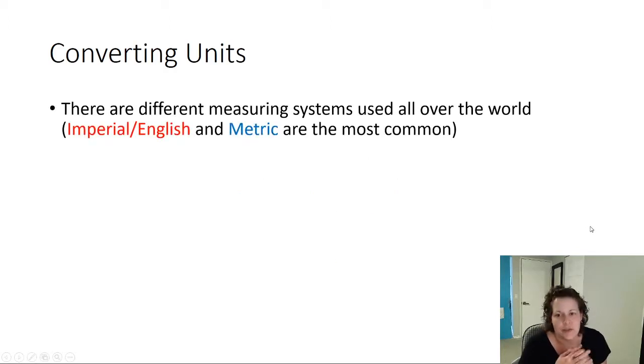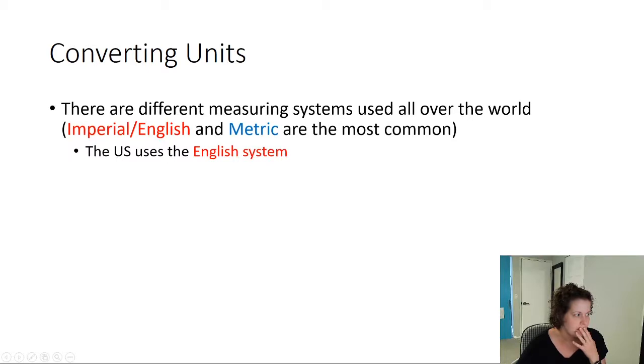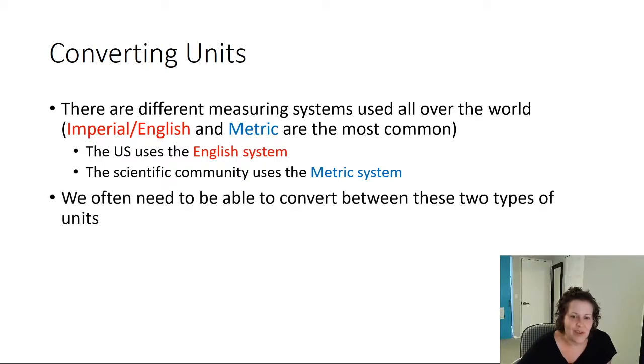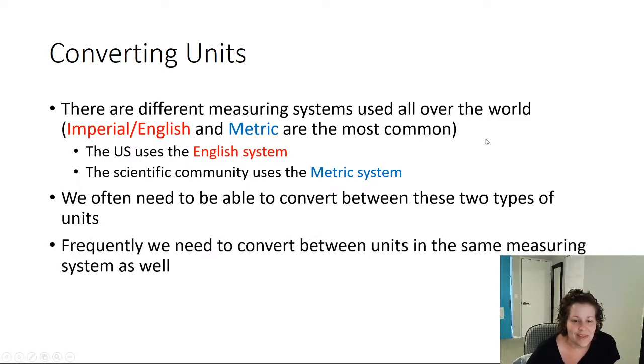So there are different measuring systems used all over the world. The two most common that we hear of are the Imperial or English system and then the metric system. The United States uses the English system. The scientific community and most of the rest of the world, to be perfectly honest, uses the metric system. And we often need to be able to convert between these two types of units based on traveling or just in the scientific community. And sometimes we'll even need to convert between units in the same measuring system.